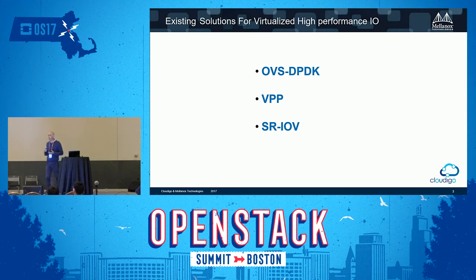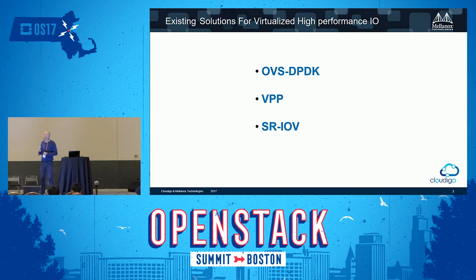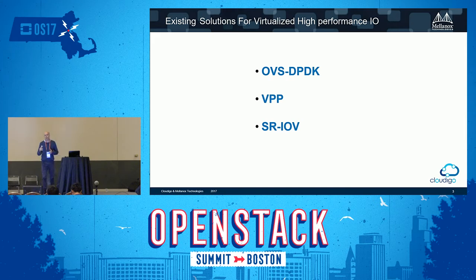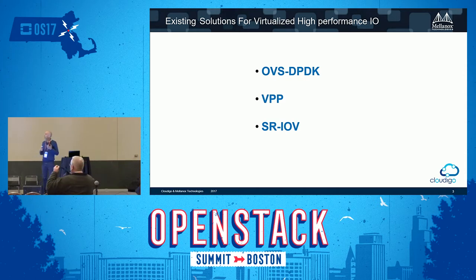Another solution is VPP. VPP works on packet batches and processes packets on a graph pipeline. It provides more customization and higher performance, but it's mostly about how to optimize and squeeze more from your CPU — mostly x86. Again, relatively, you will use a high CPU footprint to provide high-performance networking when talking about 40 and 100 gig networking.